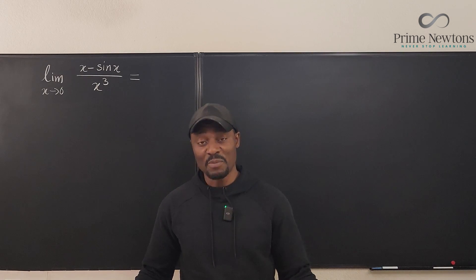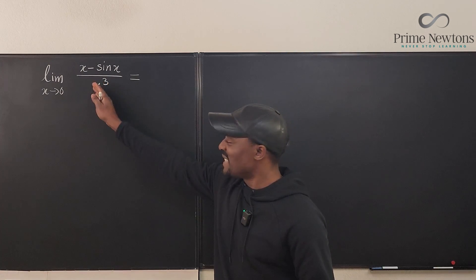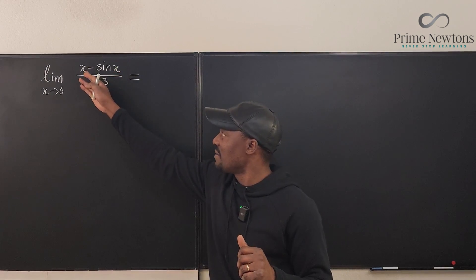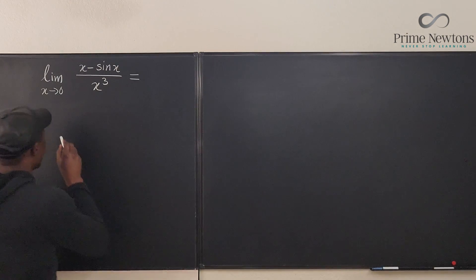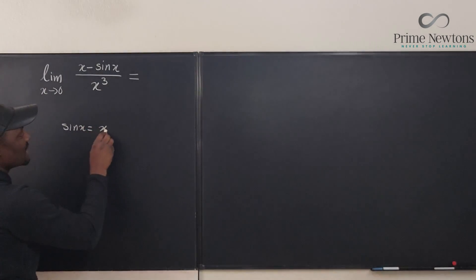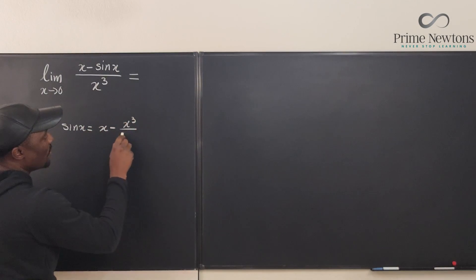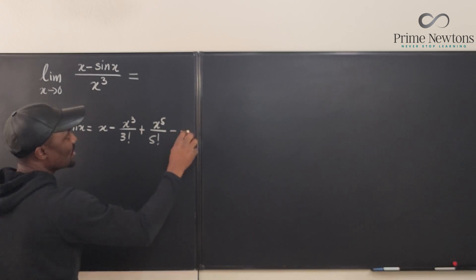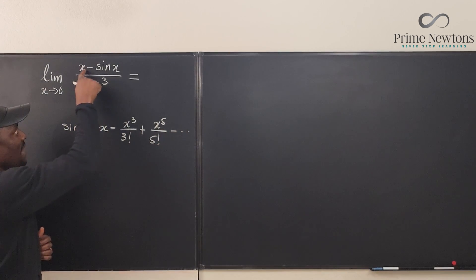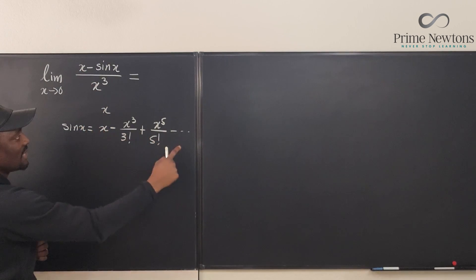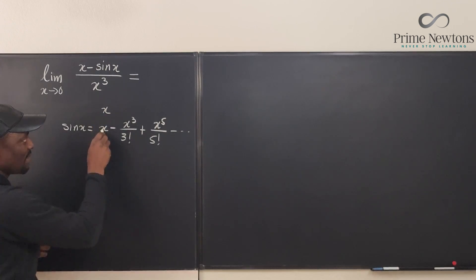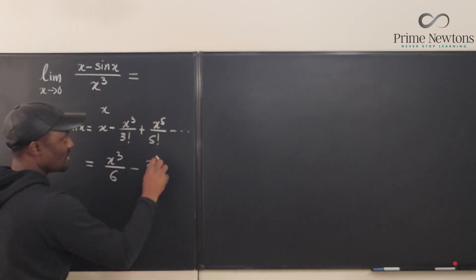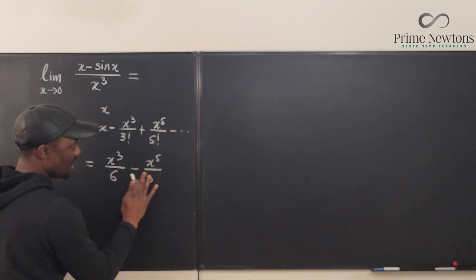There's an infinite series representation for almost every function we know. So this limit is easy to take as x goes to zero because you can just subtract the function sine from x. Sine x can be written as x minus x cubed over 3 factorial plus x to the fifth over 5 factorial minus, and you just keep going. So if I need to subtract sine x from x, it's just x minus this. x minus x is zero, and this minus this gives me x cubed over 6, and then minus x to the fifth over 120.